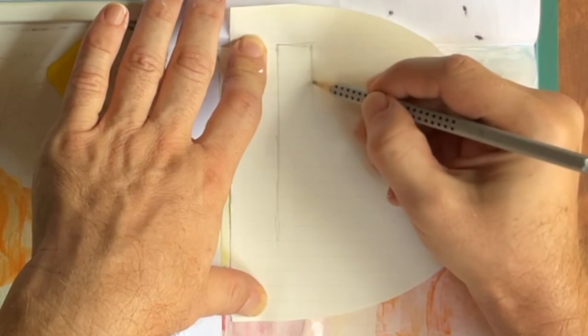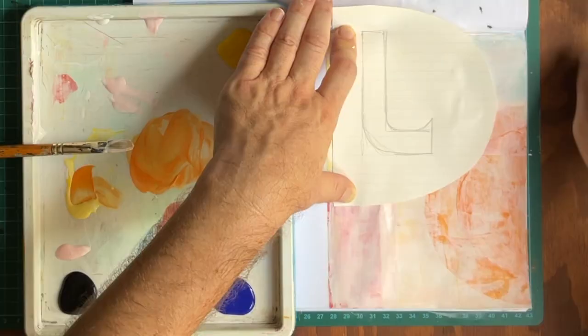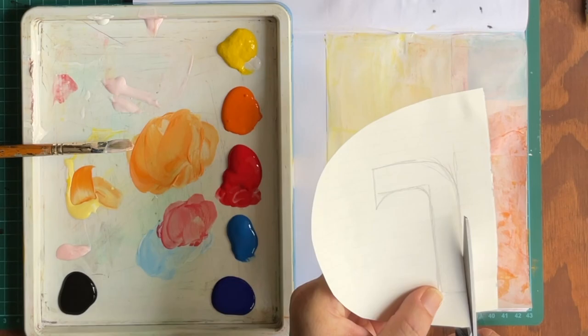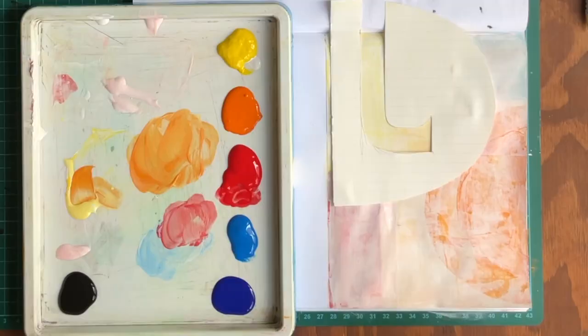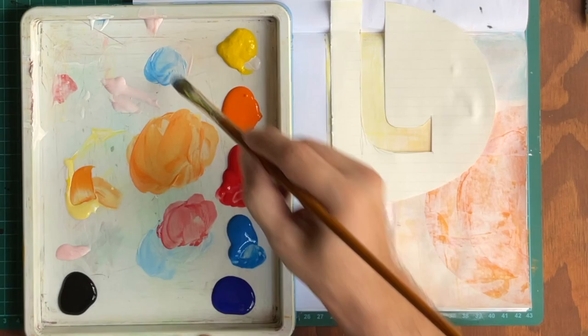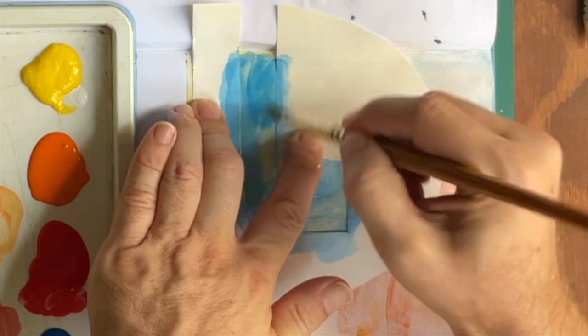Let's take the half circle we made before and draw out a reverse J shape, which we will then cut out. After cleaning my brush, I'll place the stencil down and mix some cyan blue with the white. I paint along the edges and then in the middle area, applying a second coat as well.